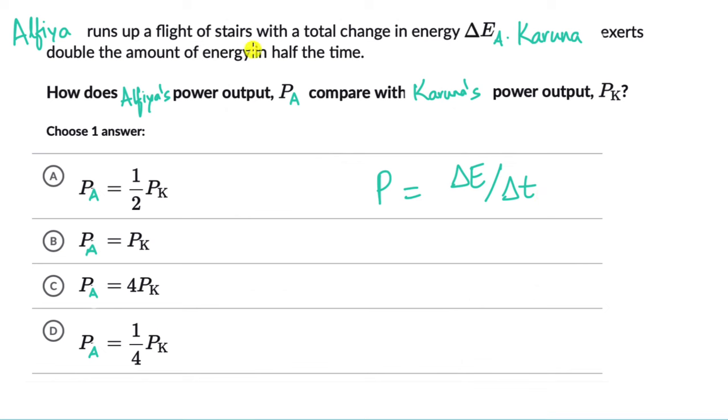Now with Alfia the energy change is delta Ea, but what Karuna does, Karuna exerts double the amount of energy in half the time.